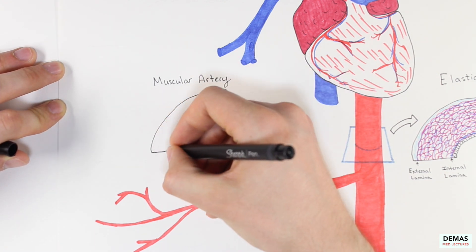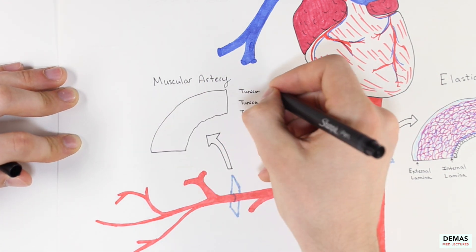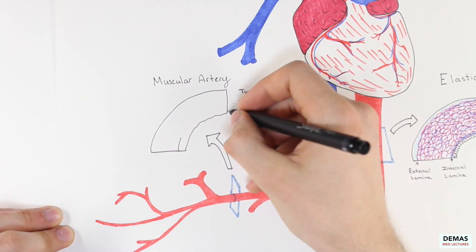Once again, there are three layers to this type of artery as well, the tunica intima, tunica media, and tunica externa.